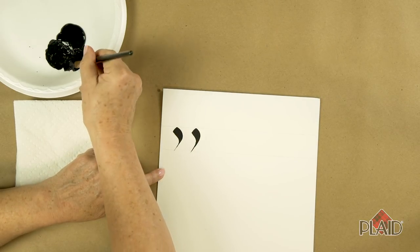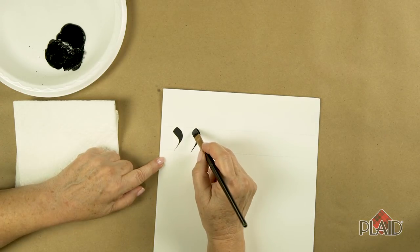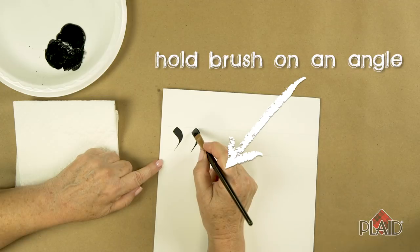So we're going to make sure again that our brush is fully loaded with FolkArt Licorice. I'm going to touch the surface. You can see I'm holding my brush on an angle.